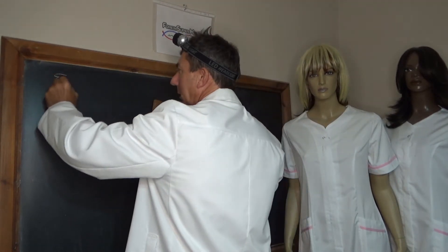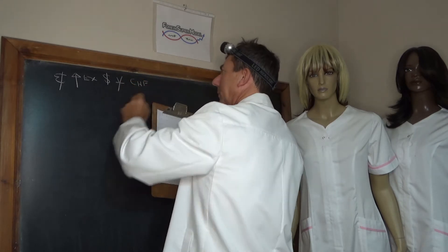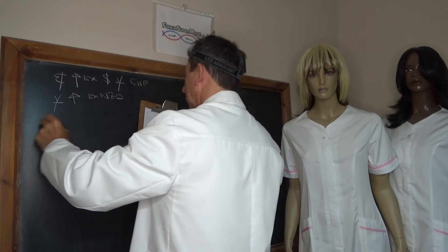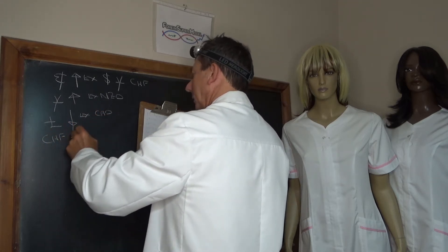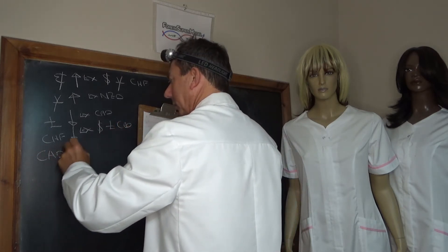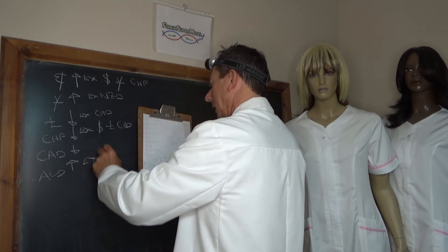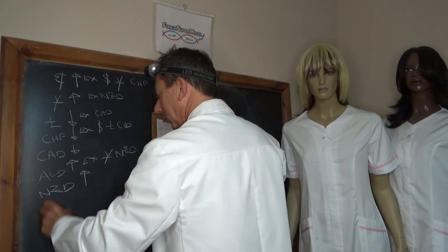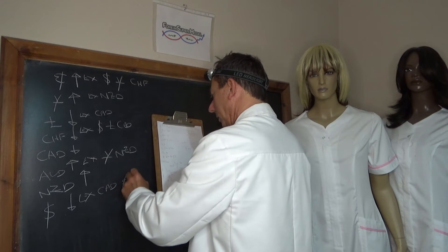The Euro is strong except against the dollar, the yen, and the Swiss, which is stronger. The yen is strong except against the New Zealand dollar. The pound is weak except against the CAD. The Swiss is weak except against the dollar, the pound, and the CAD. The CAD is weak across the board. The AUD is strong except against the yen and the NZD. The NZD is strong across the board. And the dollar is weak except against the CAD, the Euro, and the pound.